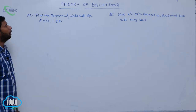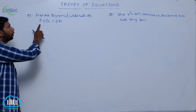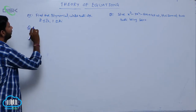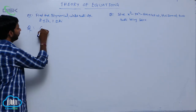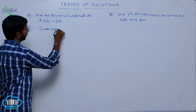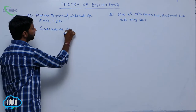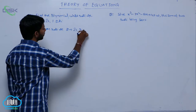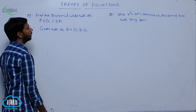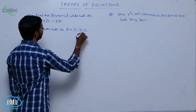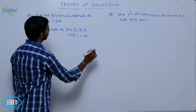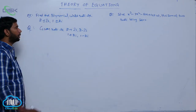Next example: find the polynomial whose roots are 2 plus or minus root 3, and 1 plus or minus 2i. The given roots are 2 plus root 3, 2 minus root 3, and 1 plus 2i, 1 minus 2i.